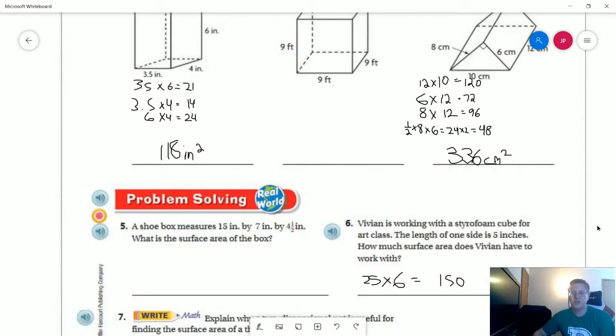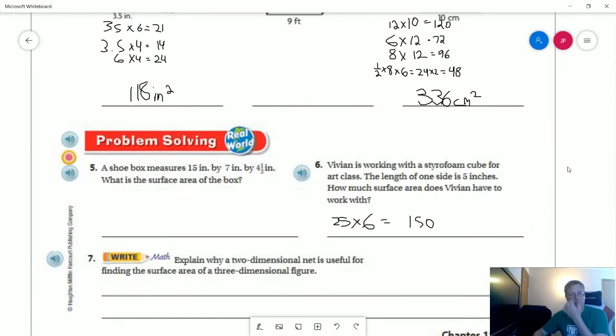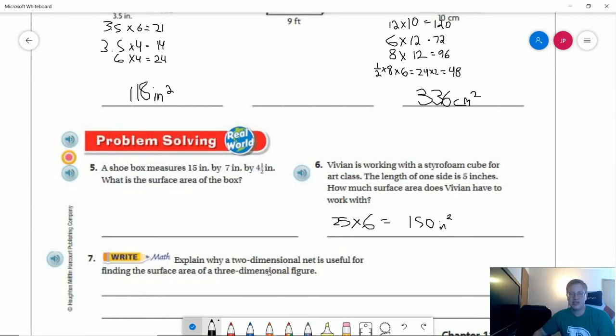Number six. So we are working with a styrofoam cube. The length of each side is 5 inches. How much surface area? We are going to do 5 times 5 to get the surface area of one side. And so that's going to be 25 square inches per side times 6 sides for a cube. And that gives us 150. And that should be inches squared. I forgot to put in that. I did it for every other problem except for that one.